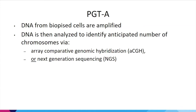These biopsied cells have their DNA amplified, since four to ten cells don't provide much material. The DNA is then analyzed to identify the anticipated number of chromosomes using either array comparative genomic hybridization (array CGH) or next generation sequencing (NGS). The topic of mosaicism has come to the forefront more as NGS has become more common, because this method is more sensitive and better able to identify when an embryo may fall into the mosaic category.